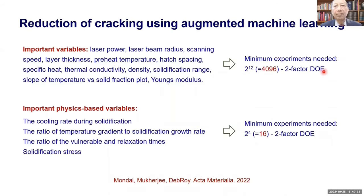Defects are a big problem in additive manufacturing, particularly cracking. The important variables include laser power, laser beam radius, scanning speed, and a whole host of other variables. If you count all of these, you get 12 important variables that can affect cracking. So if I wanted to do experiments by trial and error to avoid cracking using a two-factor design of experiments, that would mandate 4096 experiments. But if I look at the non-dimensional numbers, I can bring these 12 variables down to only four, so we'll need only 16 experiments instead of 4096.